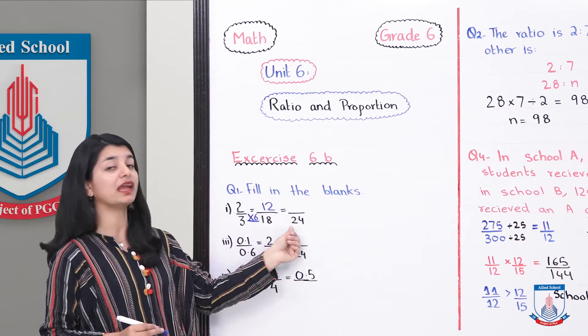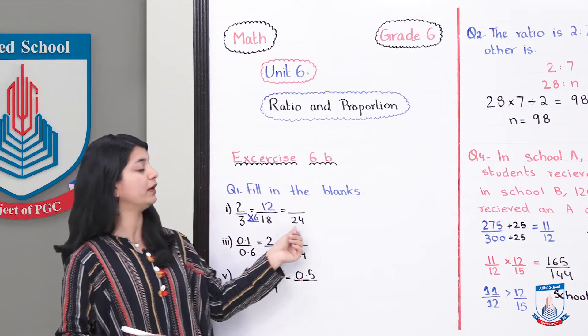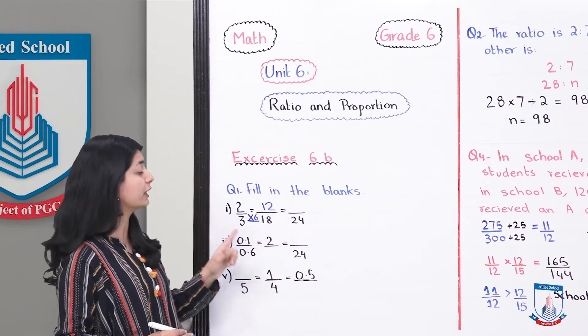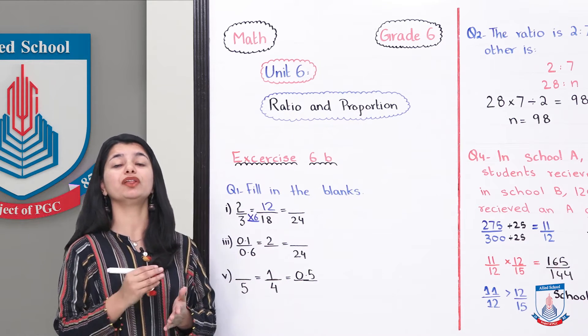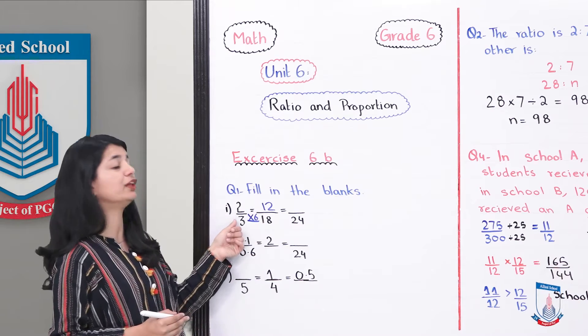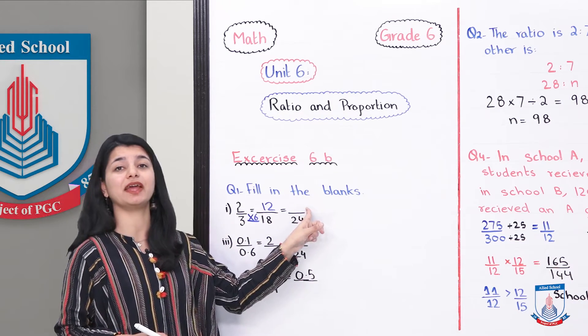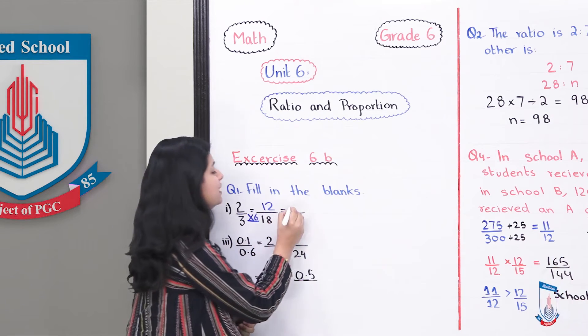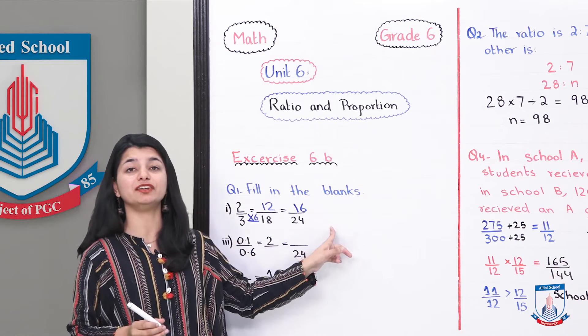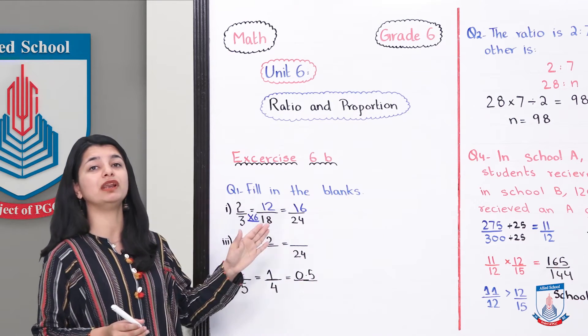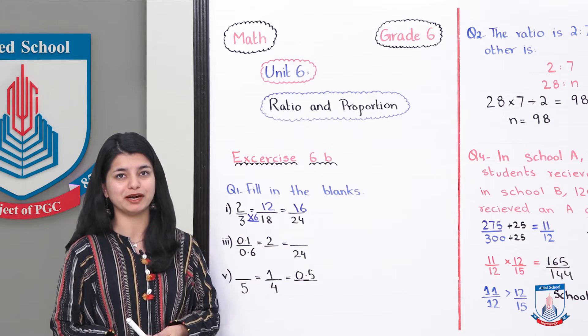For the second one, again we have to determine the relationship. If you see 3 and 24, you have to tell what relation 3 has to 24. 3 times 8 are 24. Once we know that 3 was multiplied by 8, then 2 also has to be multiplied by the same number. 2 multiply by 8 would be 16. In this way, we filled in the blanks by determining the relationship between the two numbers. This is the method for equating proportions.